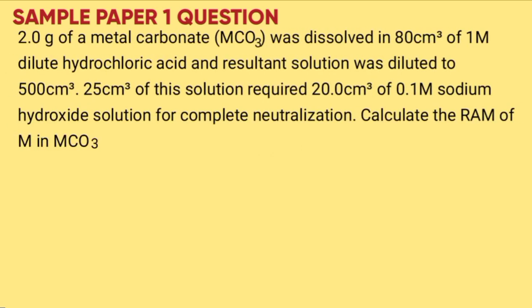Example question: 2 grams of a metal carbonate MCO₃ was dissolved in 80 cm³ of 1 molar hydrochloric acid, and the resultant solution diluted to 500 cm³. 25 cm³ of the solution required 20 cm³ of 0.1 molar sodium hydroxide for complete neutralization. Calculate the relative formula mass of the metal M in MCO₃. To solve this question, a student will have to follow the following steps.